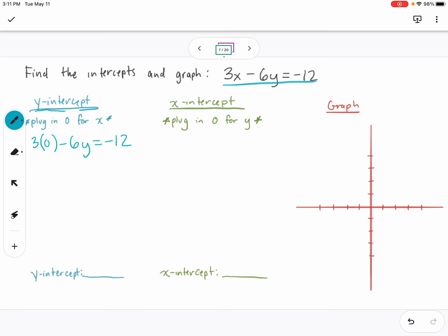So what does that look like? 3 times 0 is just 0, so that cancels out. What I'm left with is negative 6y equals negative 12.